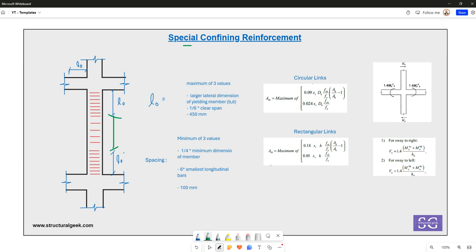And again at the column end, you would find the spacing of the stirrups to be lesser. The fundamental reason is that you need to comply with the special confining reinforcement requirement. We'll be looking at what exactly special confining reinforcement is, and also for how much portion we need to provide it.